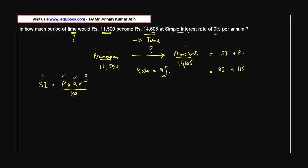The principal is 11,500 and the amount is 14,605, so we can find the simple interest. Simple Interest = 14,605 − 11,500 = 3,105.